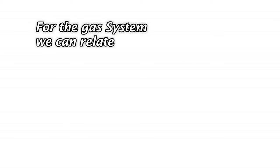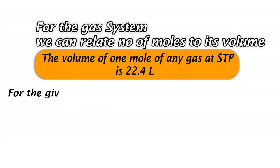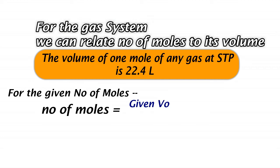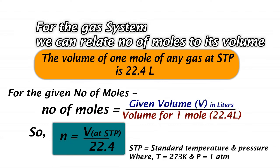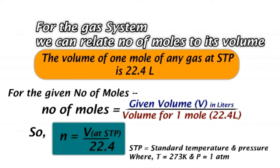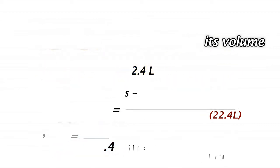For gaseous systems, we can relate the number of moles to its volume. The volume of 1 mole of any gas at STP is 22.4 liters. STP stands for 273 Kelvin temperature and 1 atmosphere pressure.